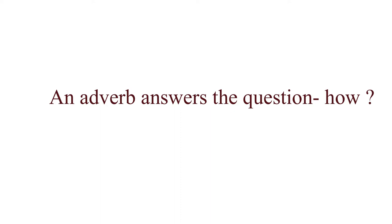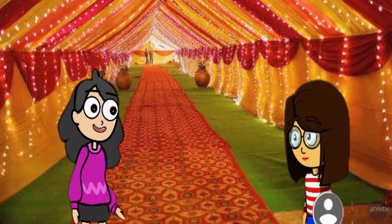As we all know, when two or more people gather somewhere, they start talking about different topics or issues. Two friends, Rhea and Aisha, are there in a marriage party. Let us see what they are talking about.